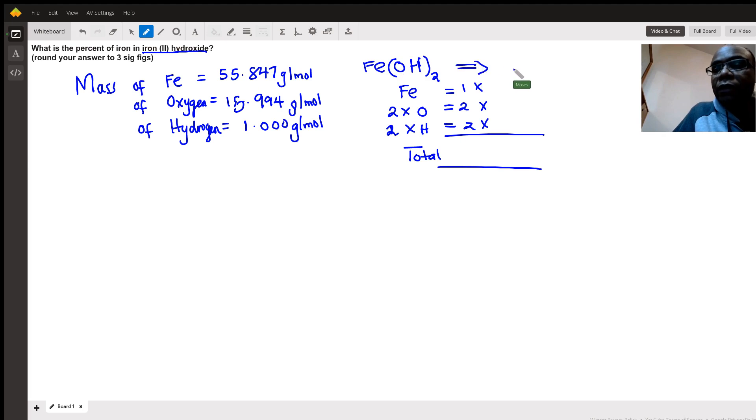So iron(II) hydroxide is written like this: Fe(OH)₂. Why? Because we know that iron(II) has a charge of 2+, and hydroxide has a charge of negative one. If you drop these numbers, you'll find that the one comes here—OH is a polyatomic anion—the two comes below.